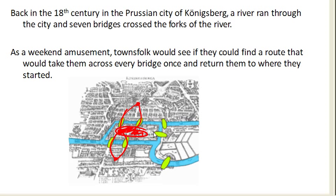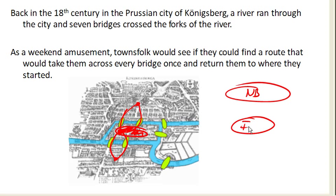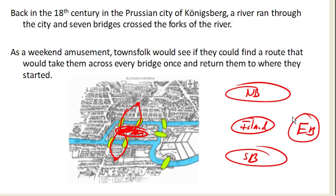So really, we have the whole north bank area up here. We have our island here. We have our whole south bank here, and our whole east bank over here. And we have two bridges connecting the north bank to the island, two bridges connecting the south bank to the island, one bridge connecting the island to the east bank, one bridge connecting the north bank to the east bank, and one bridge connecting the east bank to the south bank.